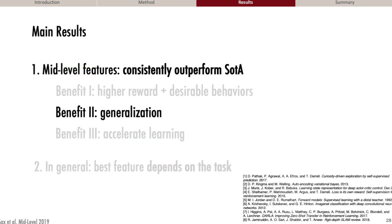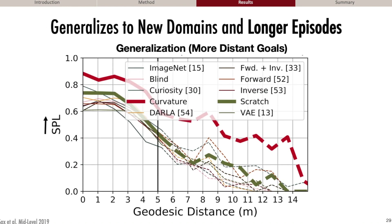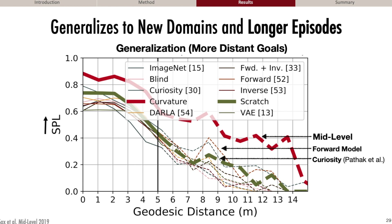Better performance can come from two sources: how much you learned during training, and how well that generalizes to the test set. We found that agents using mid-level vision do generalize better — both from the training to the test set, and also to episodes longer and harder than anything seen during training. In one experiment, we trained on episodes of 5 meters or less and tested on longer episodes; agents using mid-level vision outperformed other methods by a large margin. The second and third best features encoded environment dynamics, and using better vision provided even more improvement.